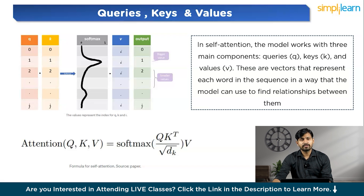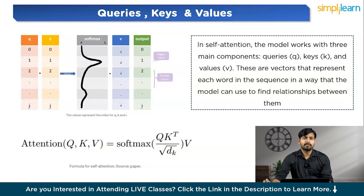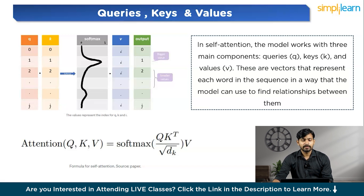The softmax function is a mathematical operation used to convert a set of raw scores — like the result of dot products between queries and keys — into probabilities. First, you have the raw scores from the dot product of the query and key vectors. Then, the softmax function exponentiates each score, making sure all values are positive. Finally, normalization divides each exponentiated value by the sum of all exponentiated values, ensuring all values add up to 1 and making them valid probabilities. The general formula for calculating attention is: Attention(Q, K, V) = softmax(QK^T / √d_k) · V.